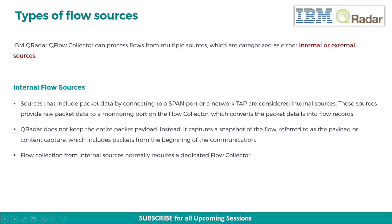IBM QRadar Q-Flow collector can process flows from multiple sources, which are categorized as either internal or external sources. Sources that include packet data by connecting to a span port or a network tap are considered internal sources. These sources provide raw packet data to a monitoring port on the flow collector, which converts the packet details into flow records. QRadar does not keep the entire packet payload; instead, it captures a snapshot of the flow, referred to as the payload or content capture, which includes packets from the beginning of the communication. Flow collection from internal sources normally requires a dedicated flow collector.